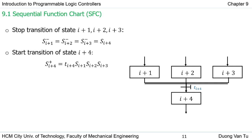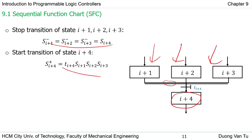For the simultaneous convergence — shown with a double line — all three branches are implemented simultaneously before converging to step I-plus-four. The stop transition is the same for each branch, but the starting transition for state I-plus-four is different: we need all three conditions — step I-plus-one, step I-plus-two, and step I-plus-three to be active — AND transition TI-plus-four to be true, then we can switch to step I-plus-four.